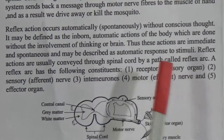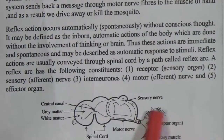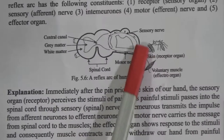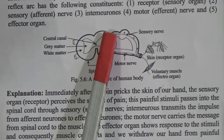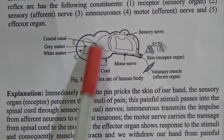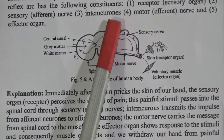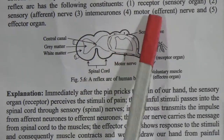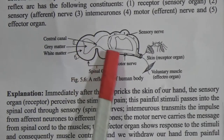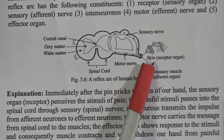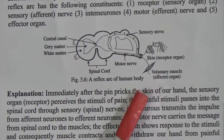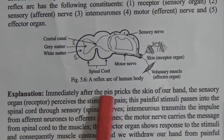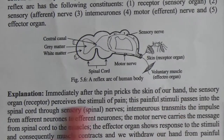A reflex arc has the following constituents. First is the receptor, that means sensory organ — where the mosquito bites. Second is the sensory or afferent nerve — through which the nerve impulse goes to the spinal cord. Then in the interneurons, from there the motor or efferent nerves bring the command to the effector organ, and the voluntary muscle tries to kill the mosquito.